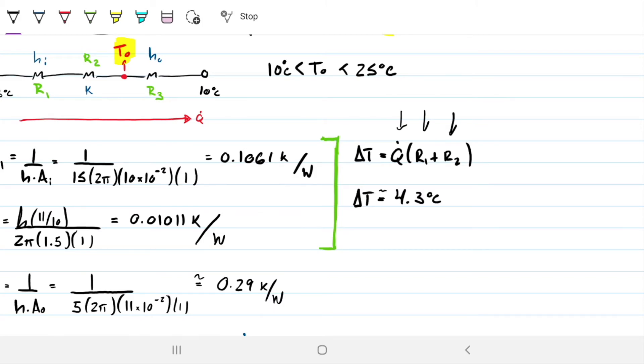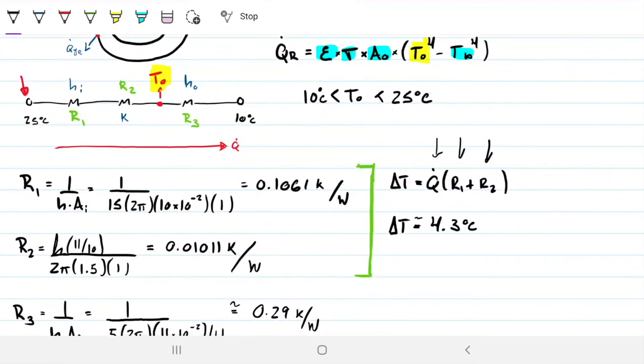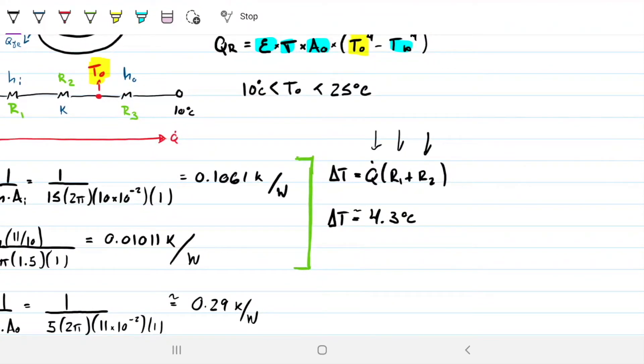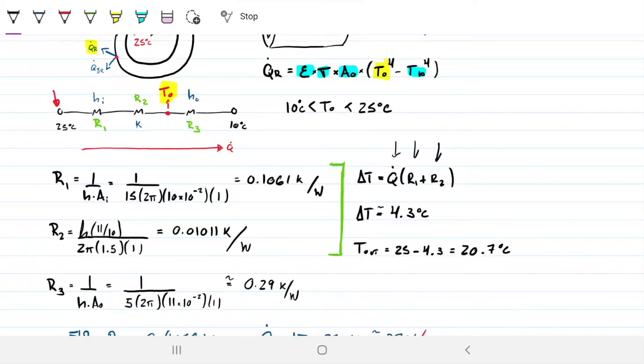Okay, and if it's 4.3 between the 25 and T0, that means that my T0 is just 25 minus whatever I found there. So that means that my T0 or T outside will just be the 25 minus the 4.3, which gives me 20.7 degrees Celsius.